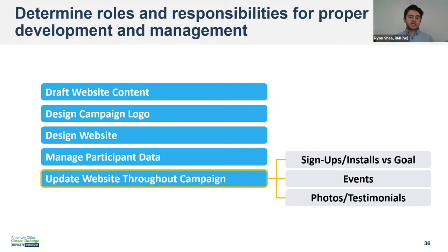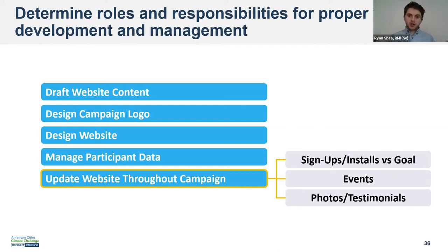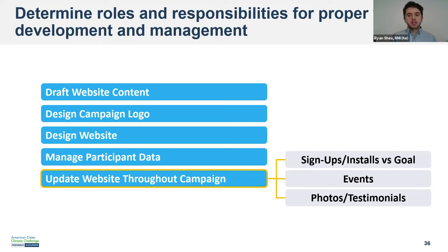Someone needs to be responsible for taking photos at events and gathering testimonials. Those are five main areas of roles and responsibilities. We have some time set aside in the community breakouts to modify a previous worksheet on roles and responsibilities for the campaign, just to make sure someone on your team is responsible for all of this. For those working with Solar United Neighbors or Solar Crowdsource or similar organizations, a lot of this will likely be done by that organization, but it's still something to make sure everyone is on the same page about.